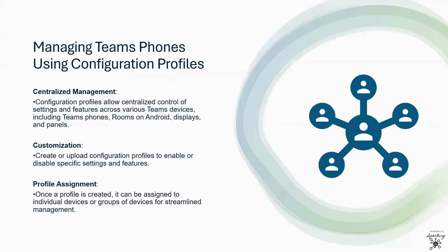You can use configuration profiles to centrally manage settings and features for different Teams devices in your organization, including Microsoft Teams Rooms on Android, Teams displays, Teams phones, and Teams panels. You can create or upload configuration profiles that include settings and features you want to enable or disable, then assign a profile to a device or a set of devices. After creating a configuration profile for a Teams device type, you assign it to one or more devices.